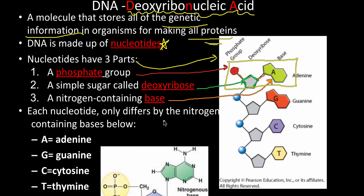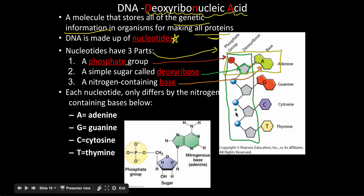Each nucleotide differs only by the base. The rest of the nucleotide — the sugar and phosphate — is the same across all nucleotides. This whole section of sugar and phosphate represents the backbone of the molecule. The only thing that's different in each one of these nucleotides is the base. So this is our sugar-phosphate backbone.